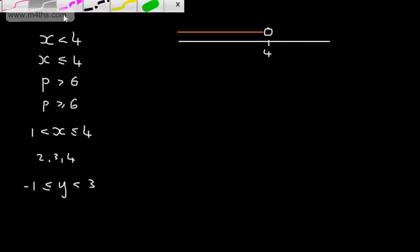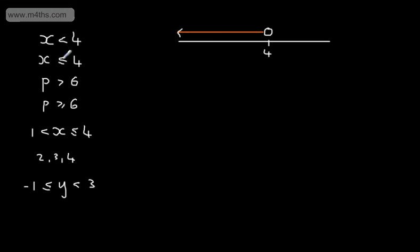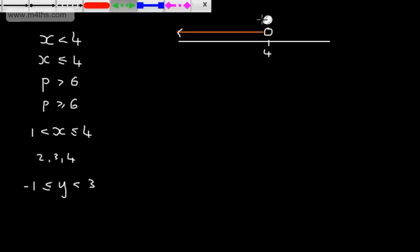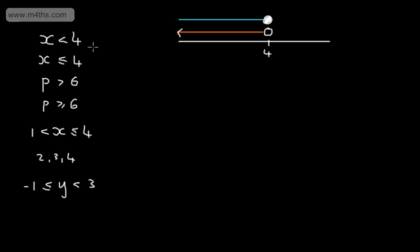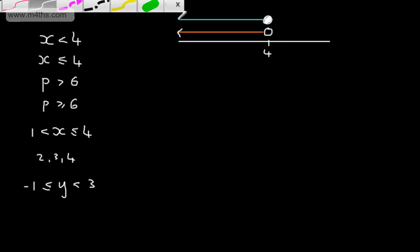If I wanted to show x is less than or equal to 4 on a number line, the only difference is now I would have a solid dot. So I'd have exactly the same number line, but at 4 I'd have a closed dot, as we can include 4 in our range of values that satisfy the inequality. That now represents x is less than or equal to 4.